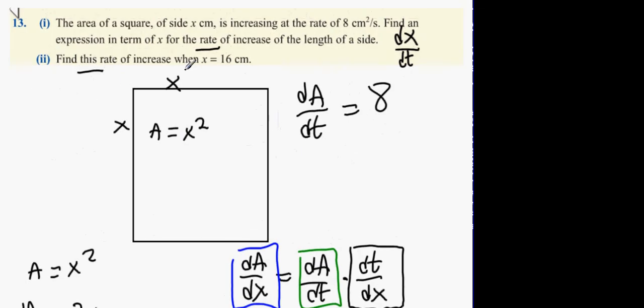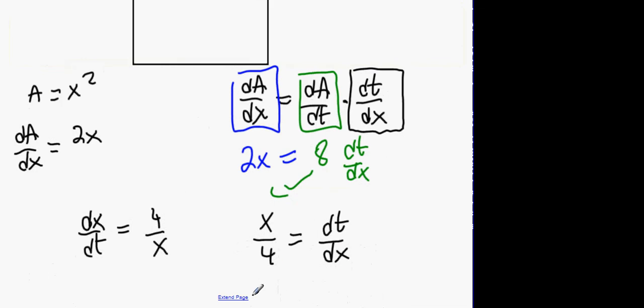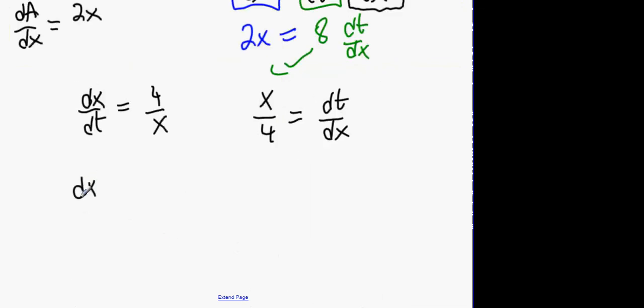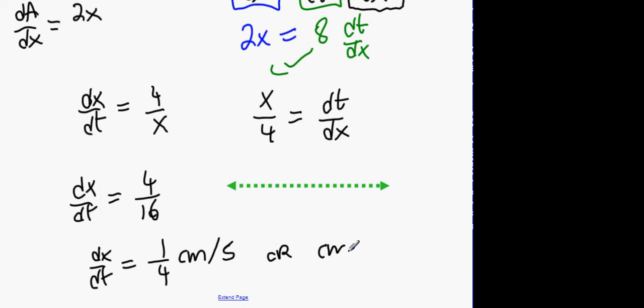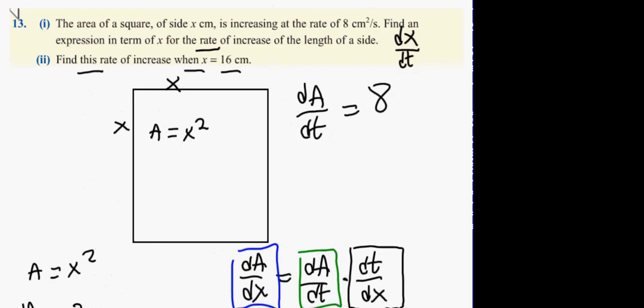Now find the rate of increase when x equals 16. Replace x with 16, and we get dx/dt equals 4 over 16, and it's going to be dx/dt is a quarter. Now what is the change of a length with time? So here's my length, and every second it gets bigger and bigger and bigger. What's the units? Centimeters. It's changing its length every second. Centimeters per second are cm/s to the minus 1. They both mean the same thing. All right guys, we're nearly there now.